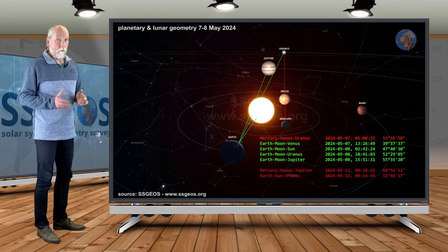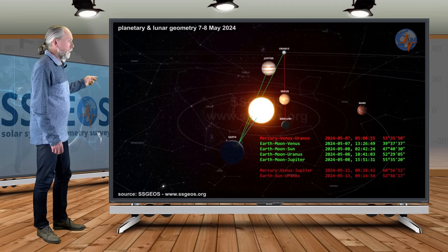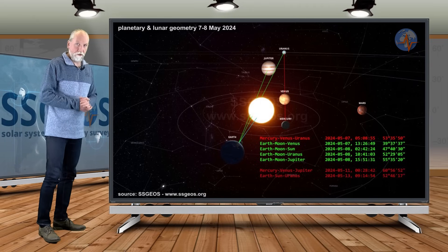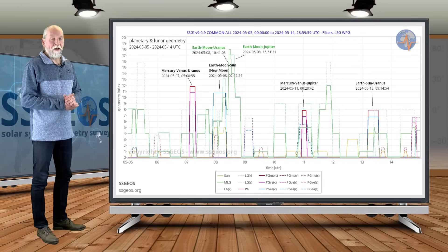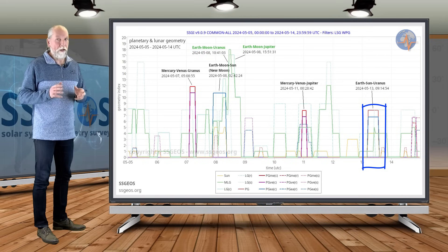Then Earth-Sun-Uranus on the 13th. That can, in worst case scenario, result in a major, borderline magnitude 7 earthquake. But that is really a worst case scenario.